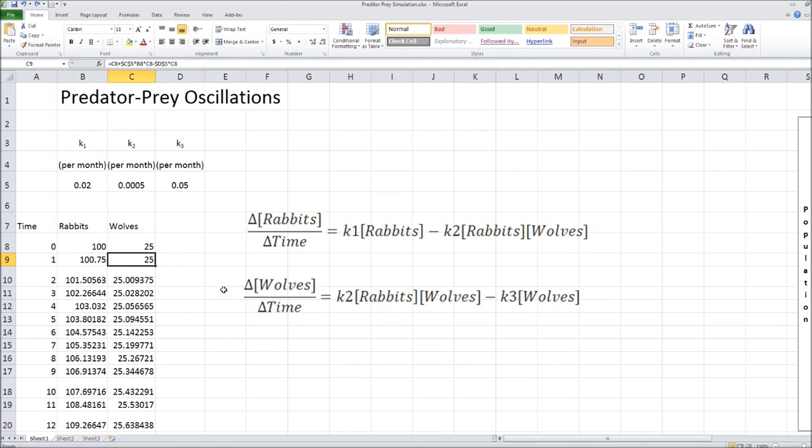And we can do the same thing for the wolves. The wolves will equal what it was previously, plus the change, the rate constant for the second step, which produces wolves, times the number of rabbits, times the number of wolves, minus the rate constant for the third step, times the number of wolves. And we can just take these formulas and copy them down.